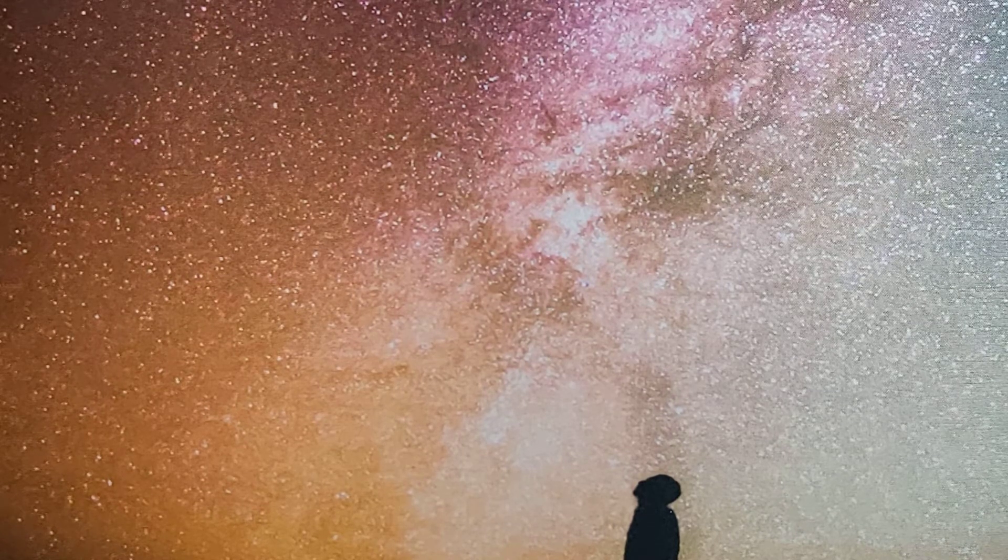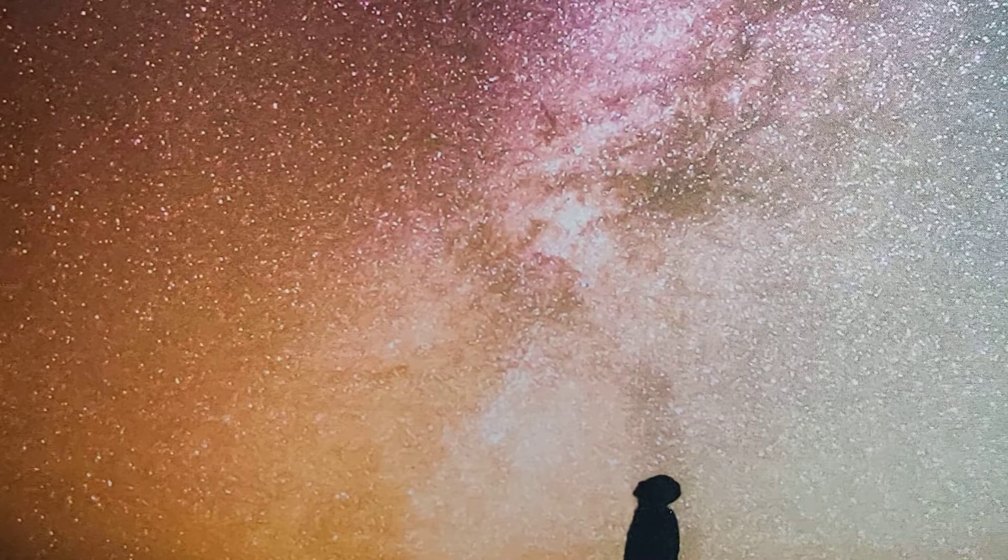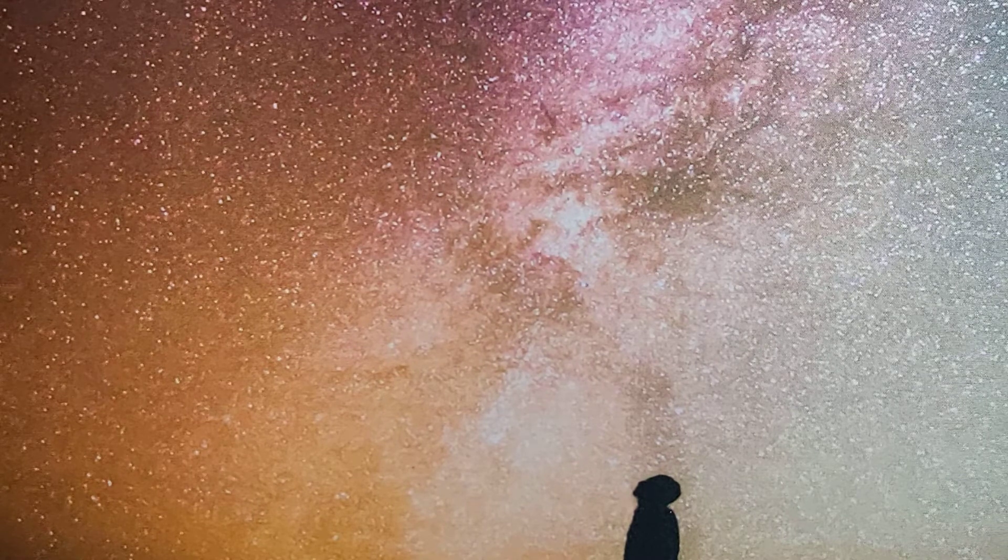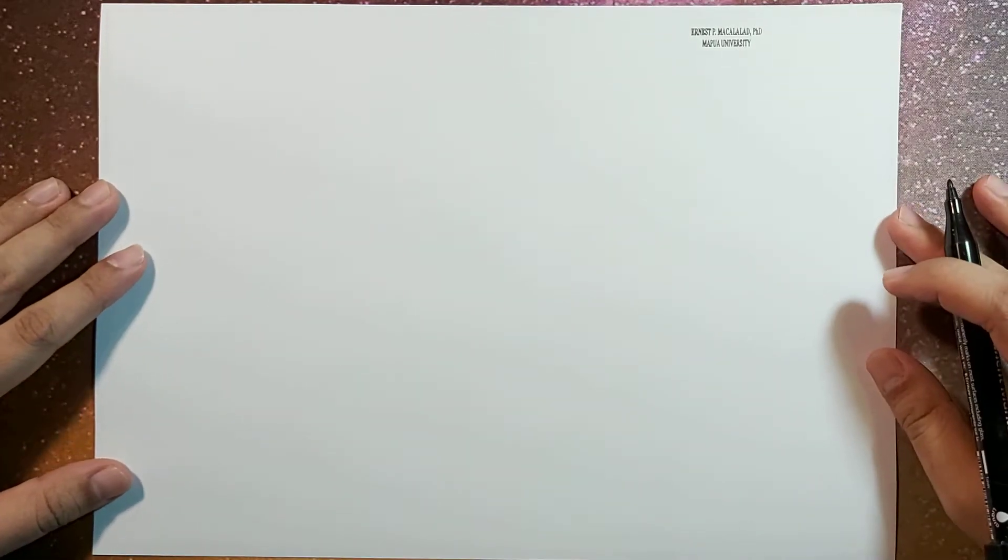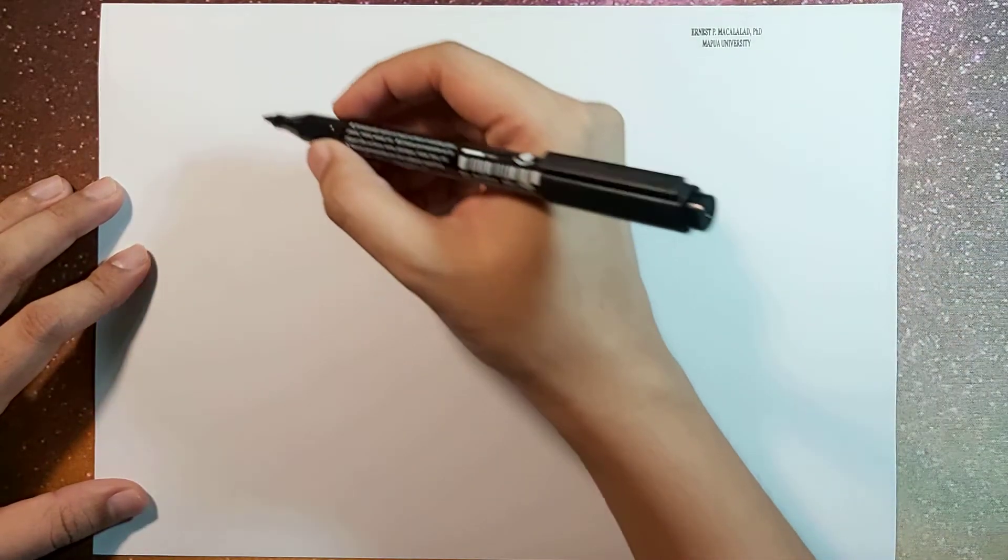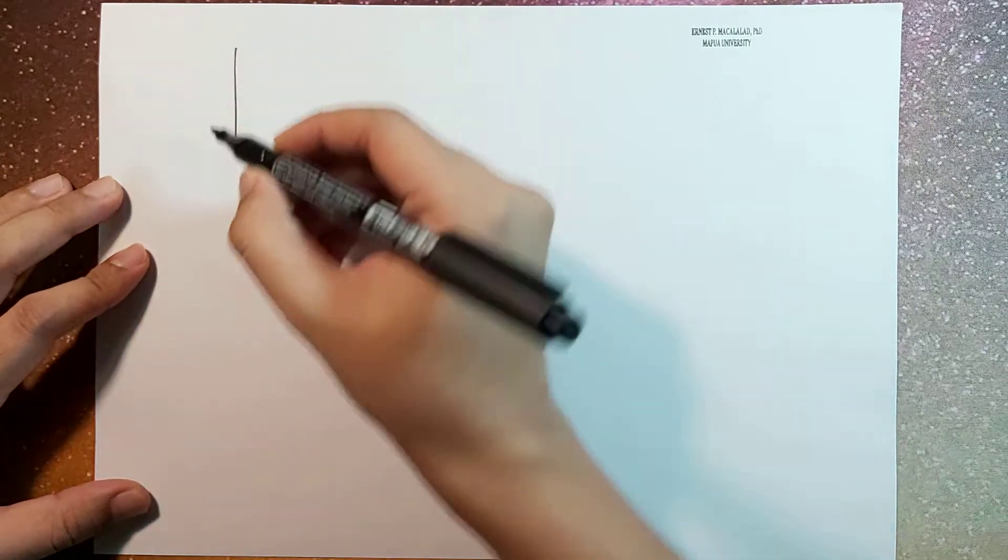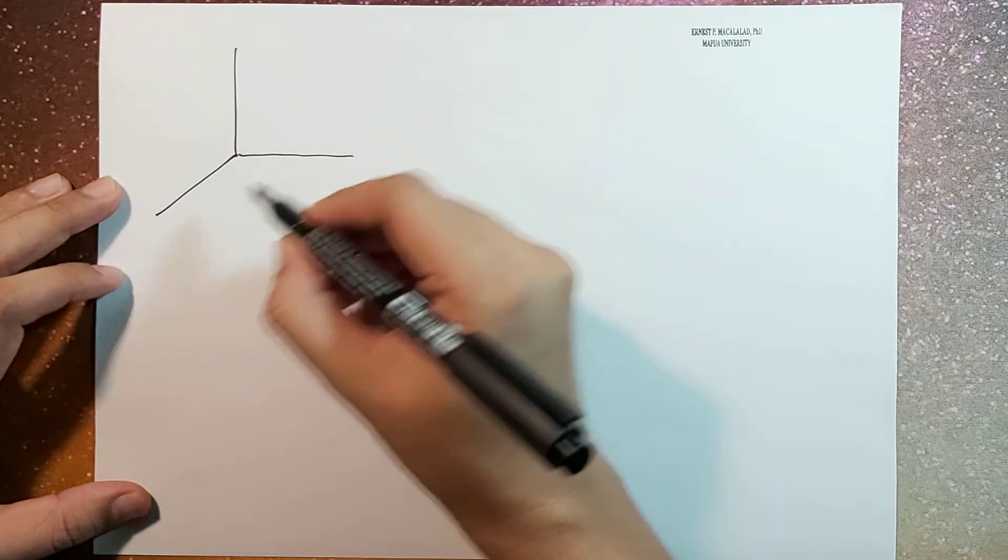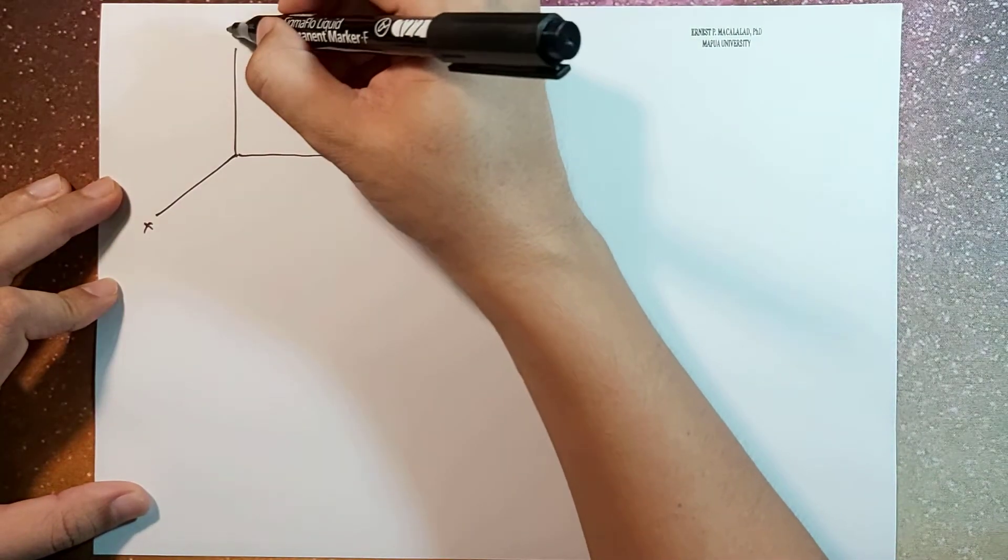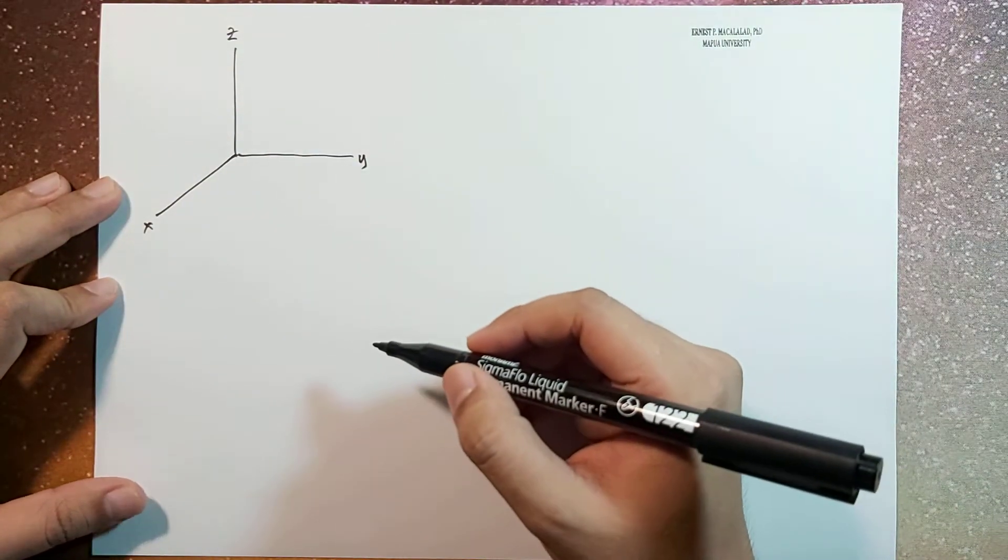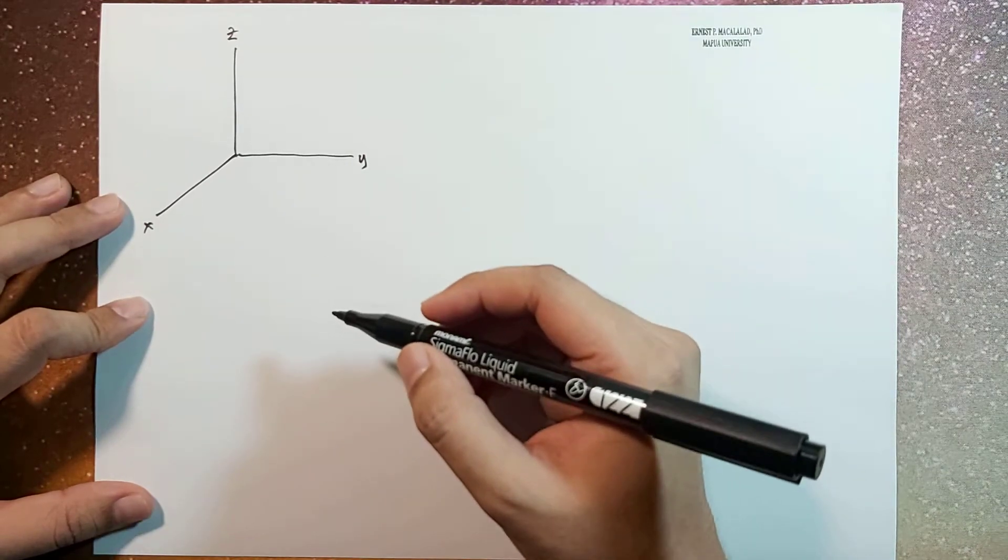What's up guys, it's me Sir Ernest, and today we're going to talk about curvilinear coordinates, specifically the spherical coordinate system. In order to understand the spherical coordinate system, let's first set up our Cartesian coordinate system. If this is your x-axis, this is your y, therefore this is your z-axis.